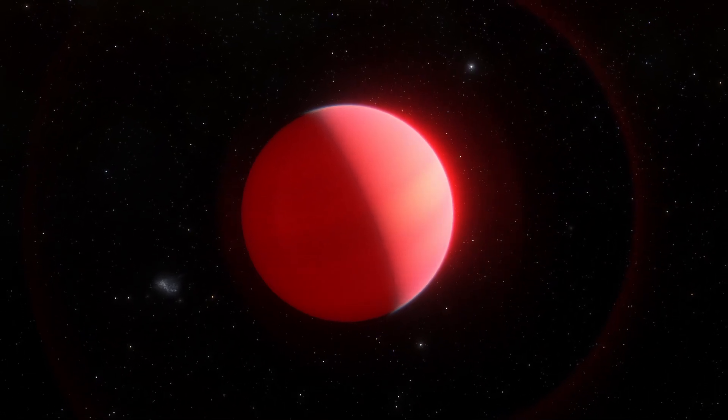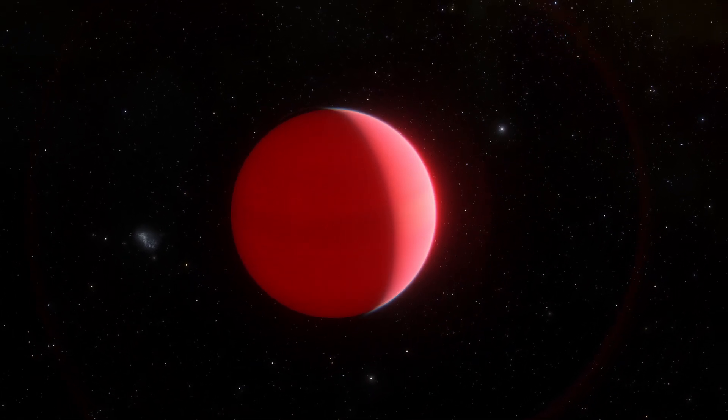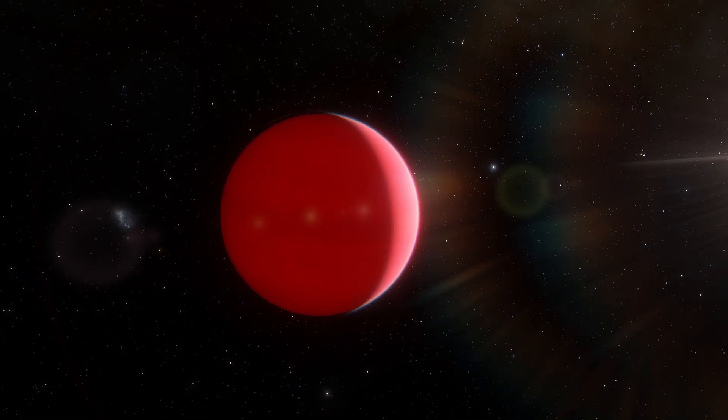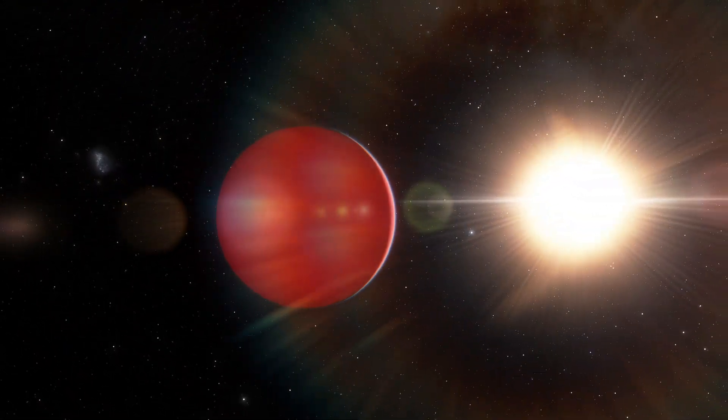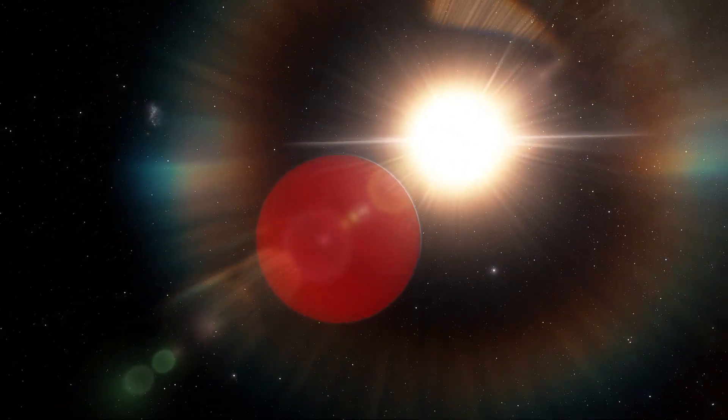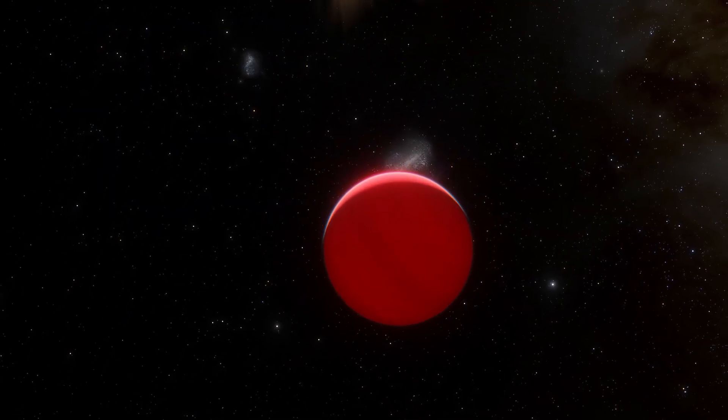Therefore, the researchers claim that the low atmospheric metallicity of the exoplanet challenges current models of exoplanet formation. Even though the mass of HAT-P-11b is only 8% that of Jupiter, the exoplanet appears to be more like a mini-Jupiter than Neptune.